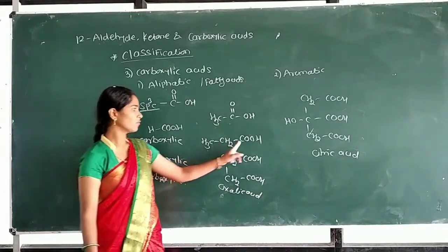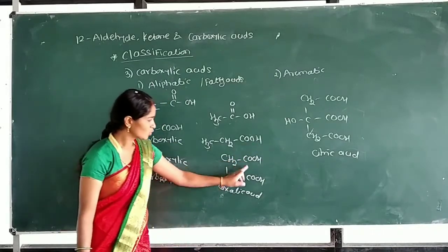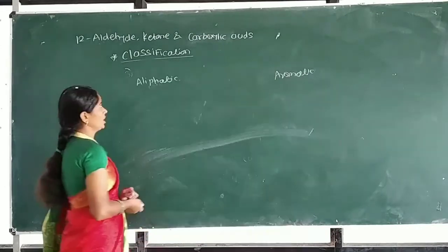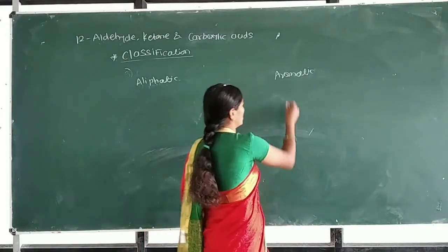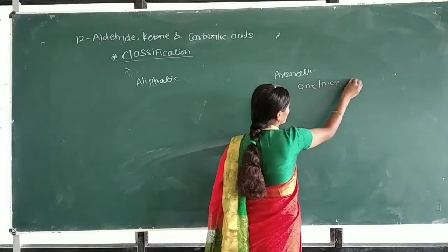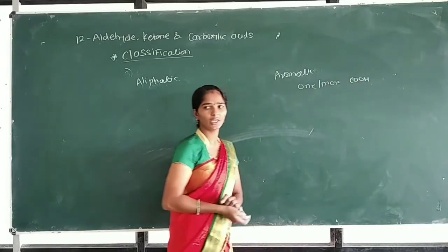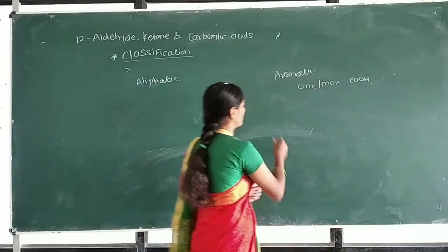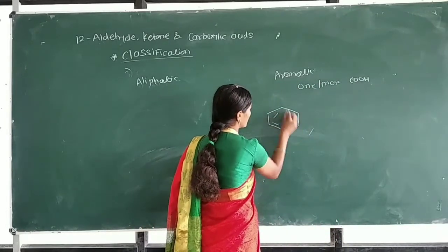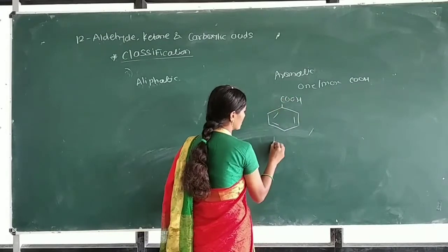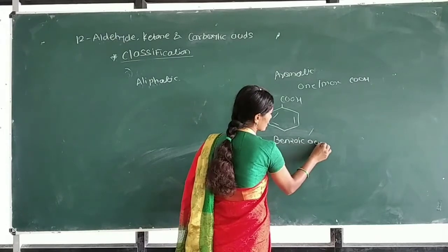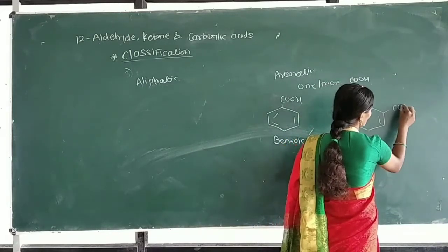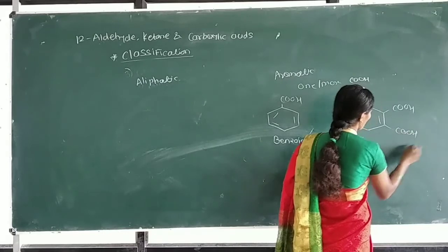In aromatic carboxylic acids, one or more COOH groups are attached to a benzene ring. For example, benzene with one COOH group attached is called benzoic acid. Another example is phthalic acid, which has two COOH groups attached to a benzene ring.